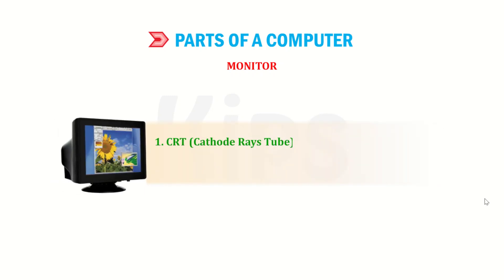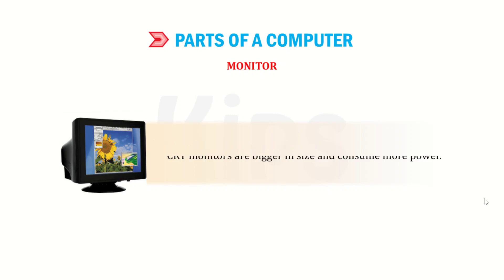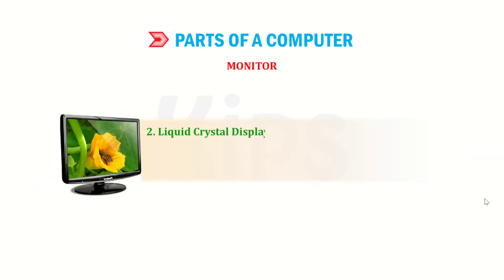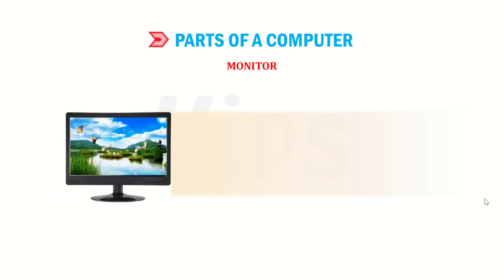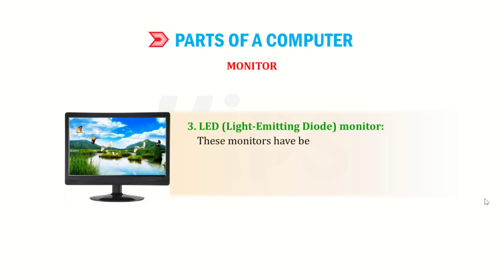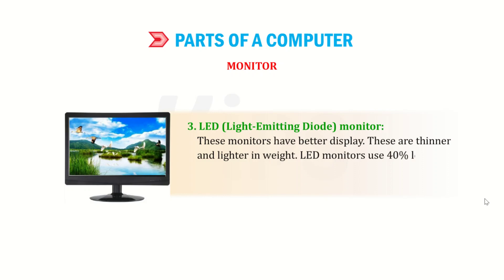CRT — Cathode Ray Tube monitors are bigger in size and consume more power. LCD — Liquid Crystal Display monitors have flat screens that consume less power. LED — Light Emitting Diode monitors have better display, are thinner and lighter in weight. LED monitors use 40% less power than LCDs and last longer. These monitors are in maximum use nowadays.